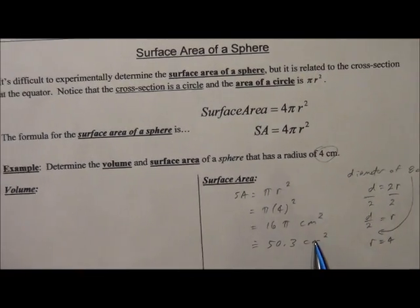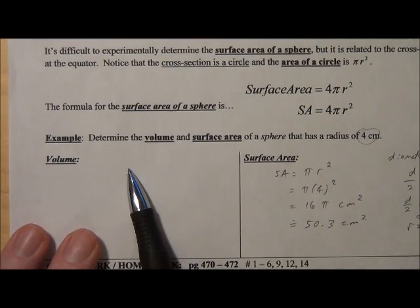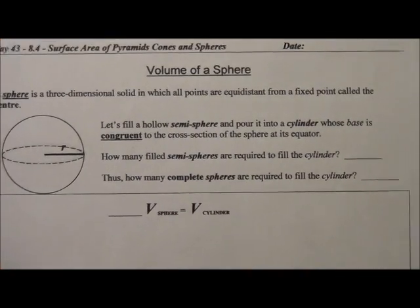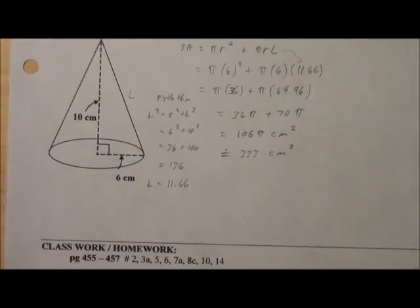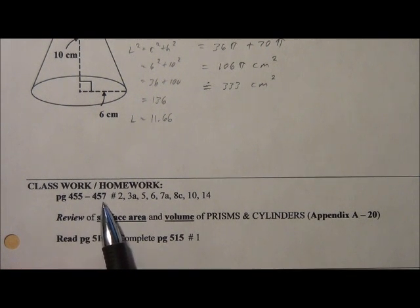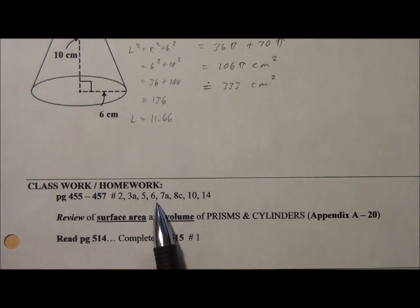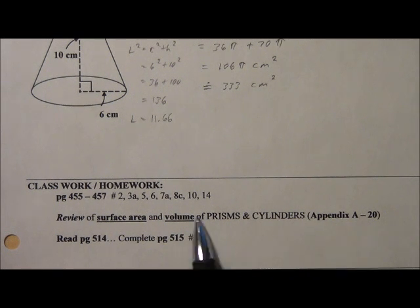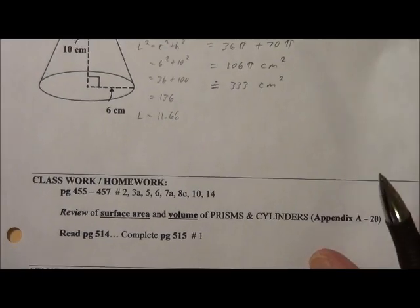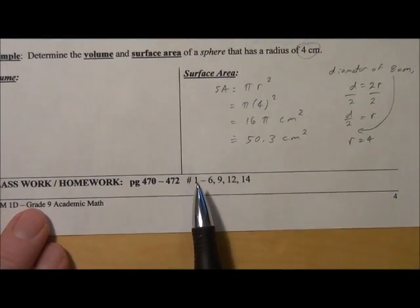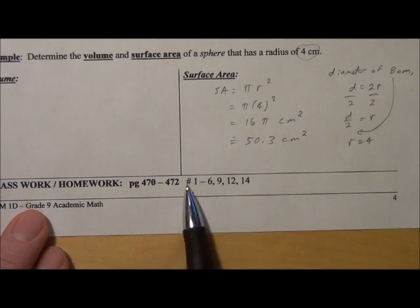Okay, so like I said before, we will get back to finding the volume of spheres a little bit later, after we do the volumes of cylinders and prisms and pyramids. So now, what I'd like you to do is do all this practice. Page 455 to 457, 2, 3A, 5, 6, 7A, 8C, 10, 14. Review the surface area and volume of prisms and cylinders. Well, volumes we'll get to later on. And please read page 514 and complete this. So that's for cones and pyramids. And then for surface areas of spheres, work on these questions from page 470 to 472.